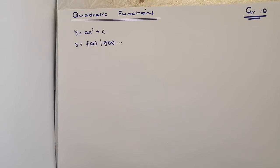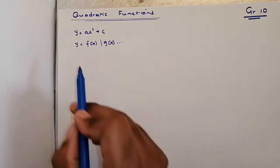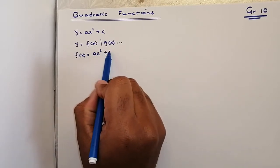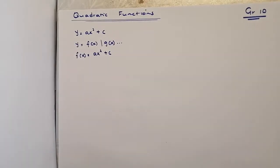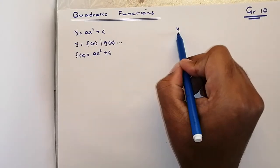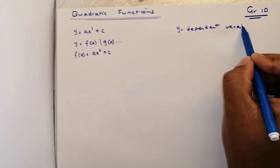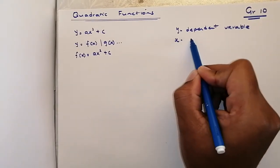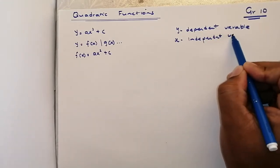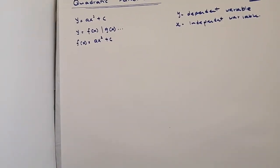I want to stress that usually an equation is not written as y equals something, but maybe it's written as f(x) equals ax² + c. This and this mean the same thing, because f(x) enables us to appreciate that y is a dependent variable, x is an independent variable, and that y is a function of x.